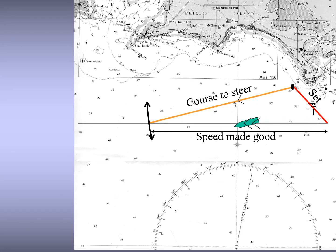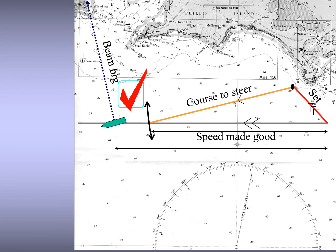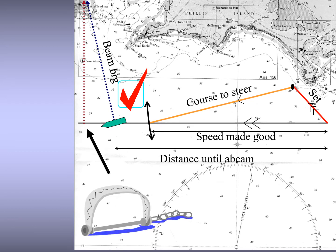These exercises are very useful in practical situations — for example when you want to pass abeam of a lighthouse, get a beam bearing, or drop anchor. Once you know the course to steer to pass off at a certain distance, drop anchor, or ensure safe navigation by counteracting for the effect of current, you are well prepared.